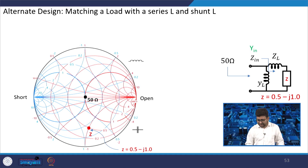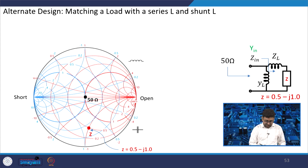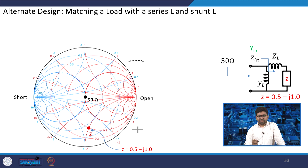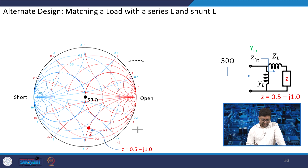In the last class, we considered Z = 0.5 − j1, and moved from Z here to here, then moved down — that is one solution. Any impedance matching problem has 2–3 solutions.